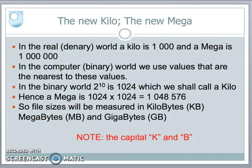In the real world, kilo was a thousand, and mega was made by multiplying a kilo by a kilo. Now in the computing binary world, we use values that are very near to these values. In the binary world, there is a number — 2 to the power of 10 — whose value is 1024, which is very near to our real-world kilo. So we use that in the digital world to represent a kilo. Hence a mega, which is a kilo times a kilo, will have a new value of 1024 times 1024.